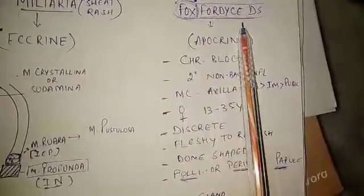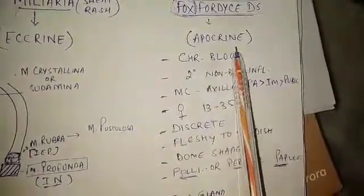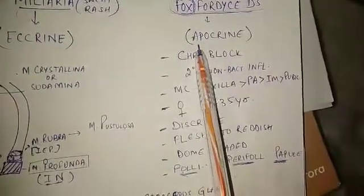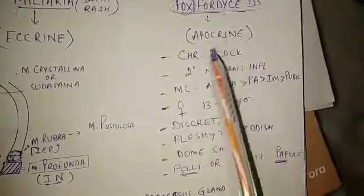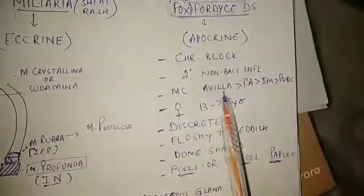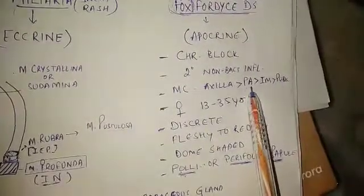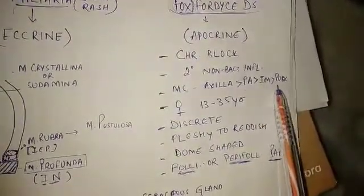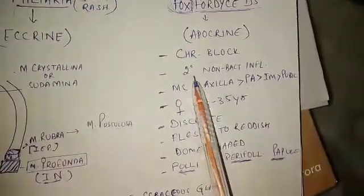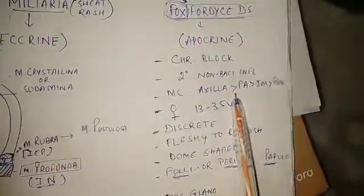Now we discuss Fox-Fordyce disease. Fox-Fordyce disease arises because of the chronic blockage of the apocrine sweat gland ducts. These apocrine gland ducts are usually found in the region of the axilla, so the axilla is the most common site of affection. After the axilla, it can also affect the periareolar area, inframammary area, and pubic area. There can be scanty non-bacterial inflammation in the lesions of Fox-Fordyce disease.